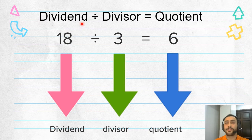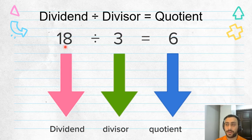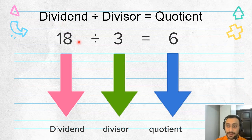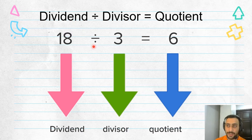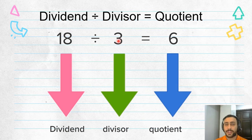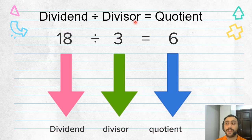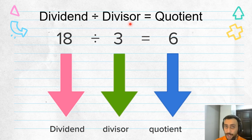Before we get to the next part, let's remember: the big number is called dividend — D-V-D-E-N. For example, 18 divided by three equals six. 18 is the dividend. And you know this already. The number of groups you want is called divisor. Divisor. Very good.